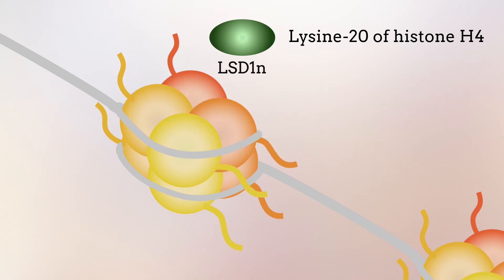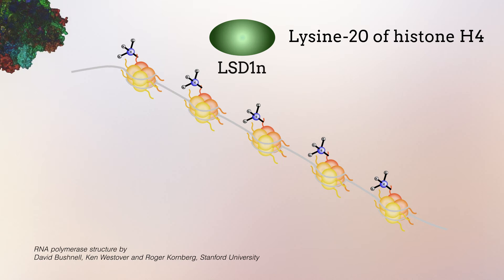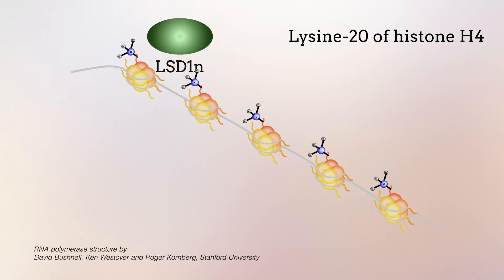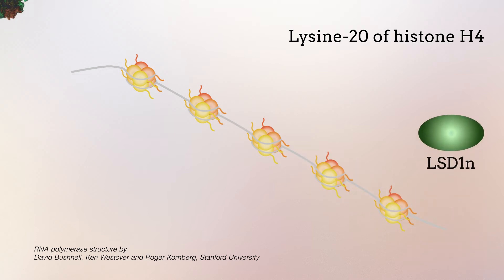Methylation at lysine 20 of histone H4 suppressed gene transcription. LSD1N removed these methyl groups and promoted gene transcription.